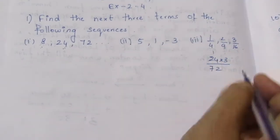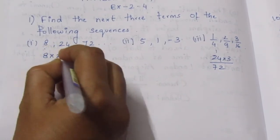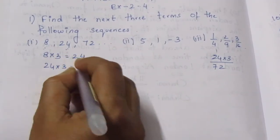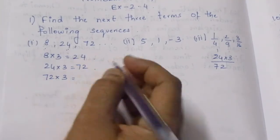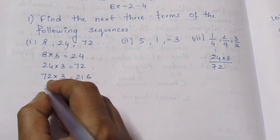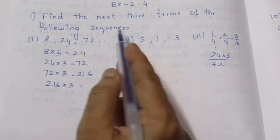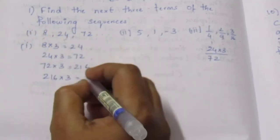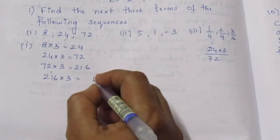So 8 x 3 = 24, and 24 x 3 = 72. The pattern is multiplying by 3 each time. So the next terms: 72 x 3 = 216. Then 216 x 3. We will find the next 3 terms.